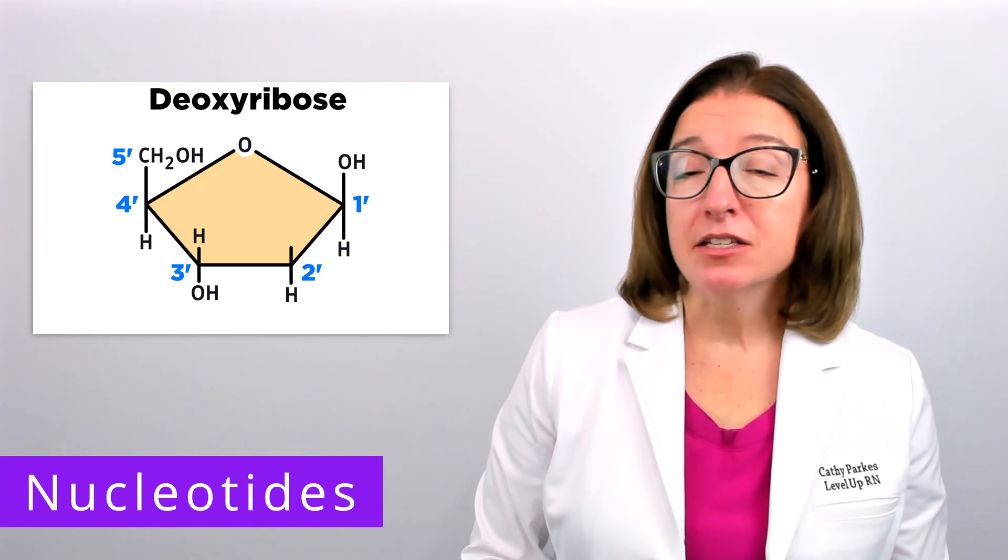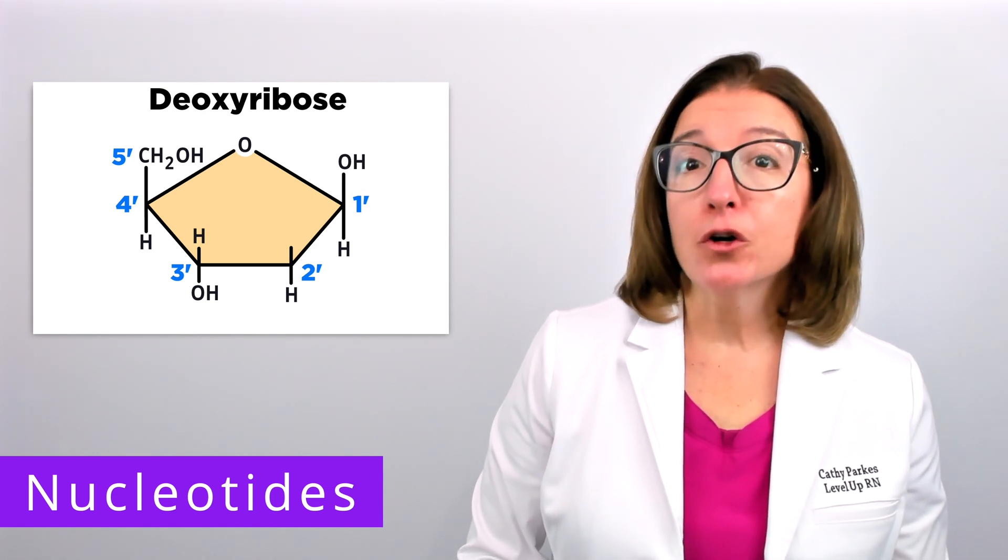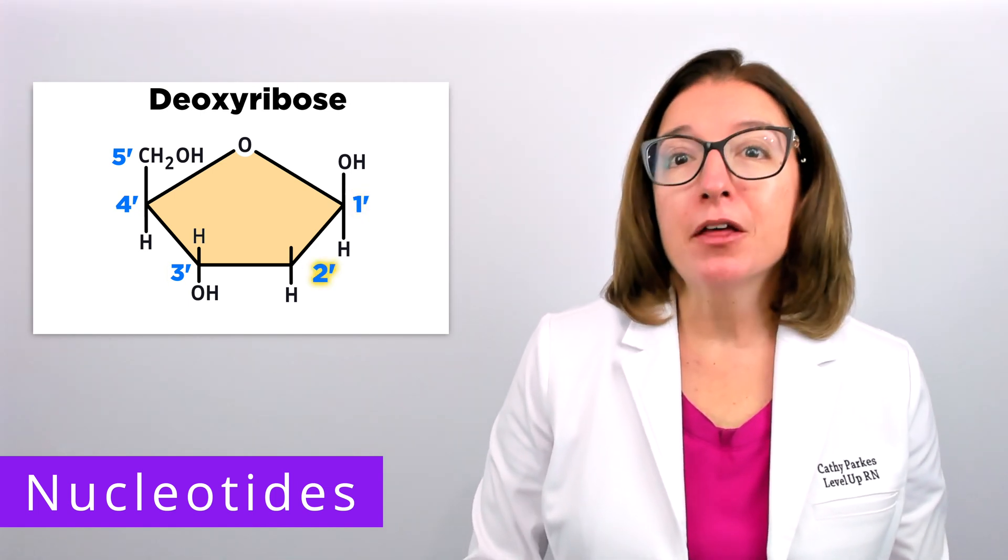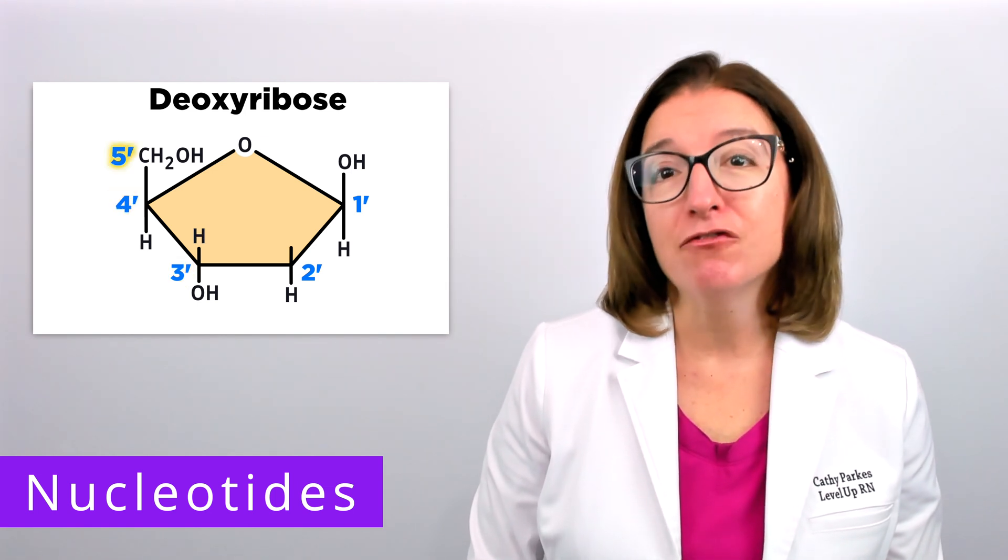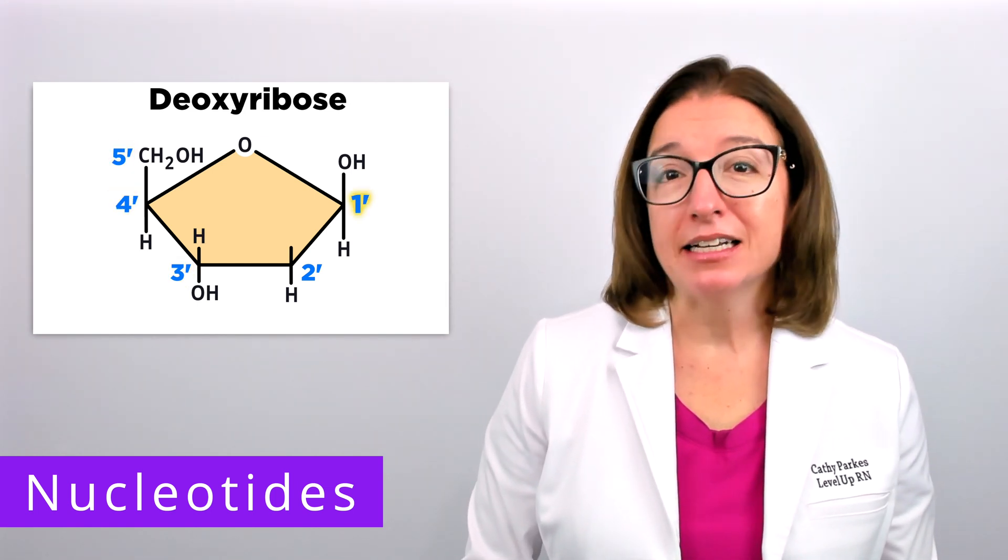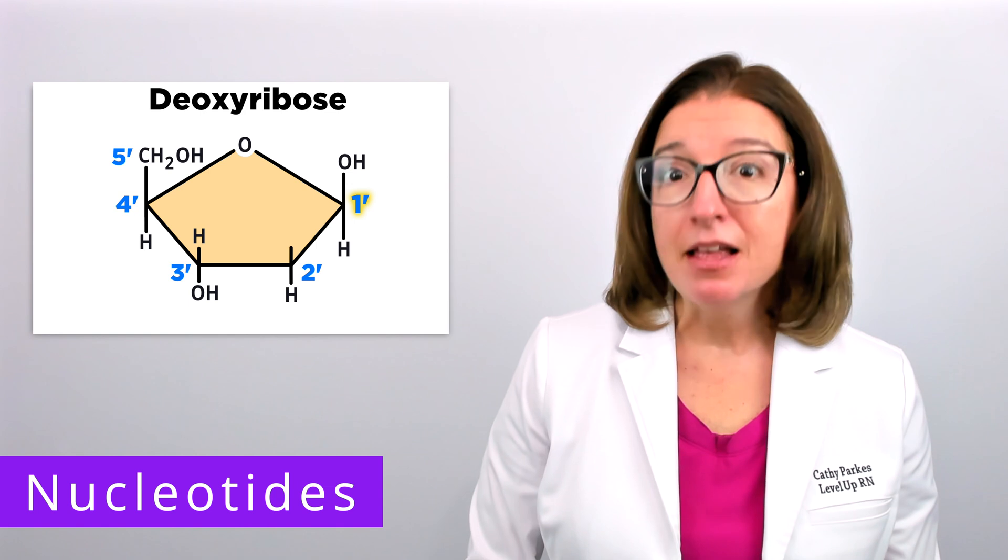The carbon atoms in a deoxyribose molecule are numbered 1', 2', 3', 4', and 5'. The 1' carbon is connected to the nitrogenous base.